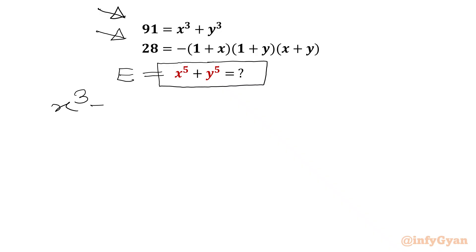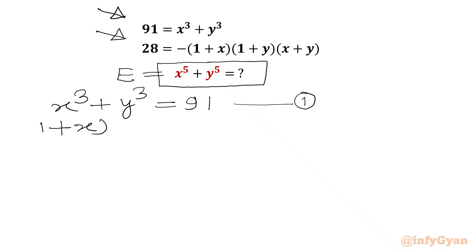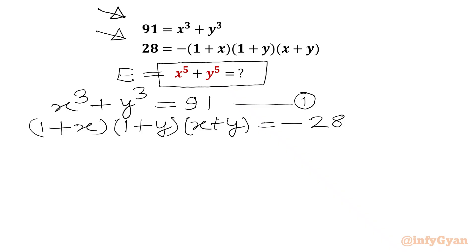The first equation: x³ + y³ = 91. I will call this equation 1. The second equation: (1 + x)(1 + y)(x + y) = −28. Let's call this equation 2.